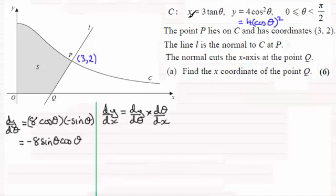We need dx/dθ. So we'll have here dx/dθ is going to equal, and differentiating this with respect to θ is just going to give me 3 sec²θ. And that's the same then as 3 divided by cos²θ.